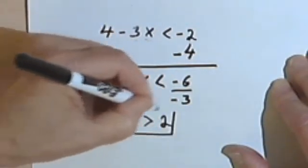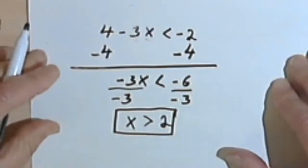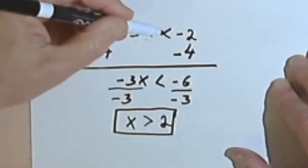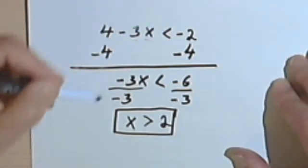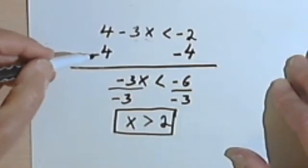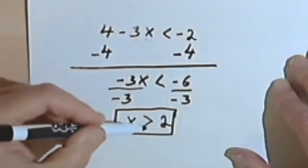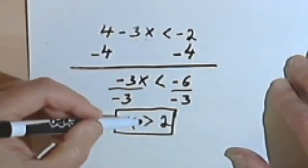So my answer is going to be x is greater than 2. Even though I started with a negative sign in the original, because I divided by a negative number, I end up with a greater than sign over here.